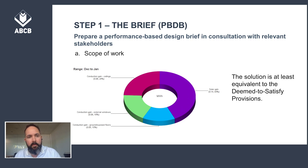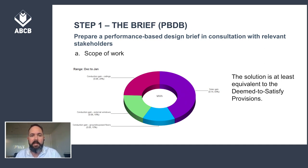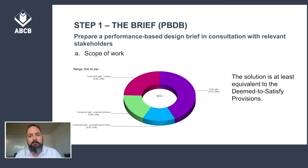Step one: prepare a performance based design brief, which includes a scope of works. The scope of works proposed by the stakeholder group is to undertake analysis to test whether the heating and cooling loads for the proposed building with no floor insulation are less than that of a reference building with deemed-to-satisfy compliant walls. It is proposed that the performance solution is achieved by demonstrating the solution is at least equivalent to the deemed-to-satisfy provisions, and as such comparison with the deemed-to-satisfy provisions is used as the assessment method.